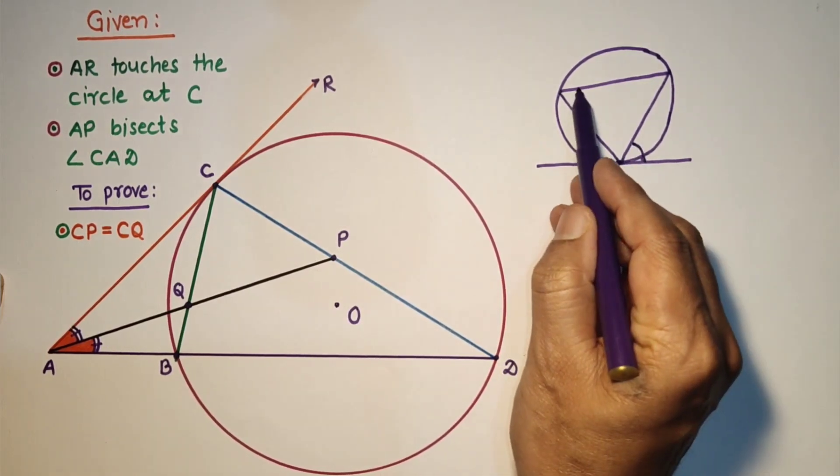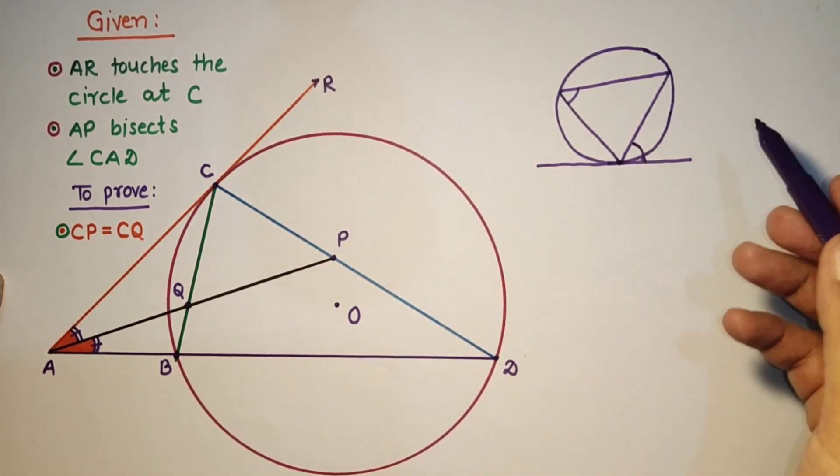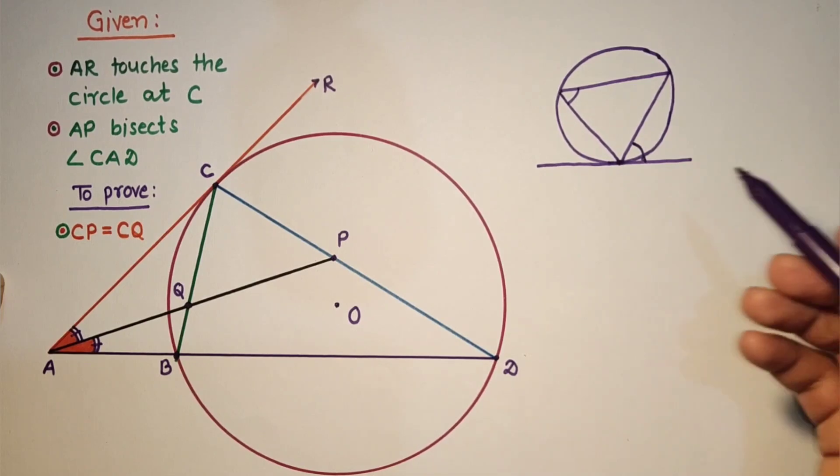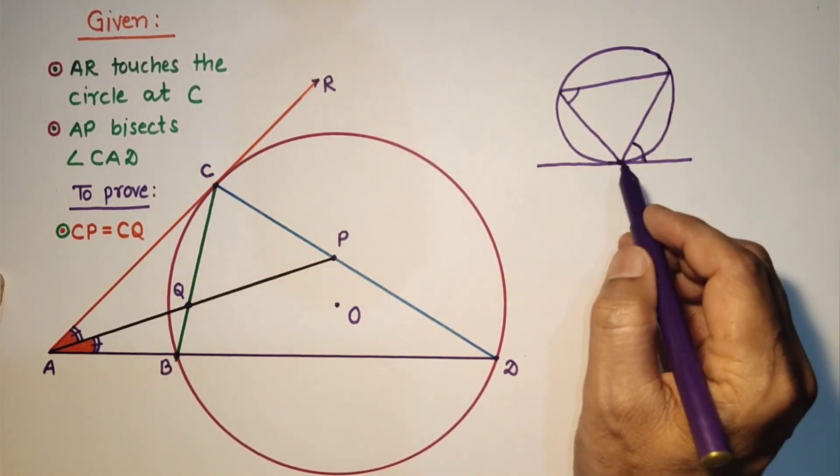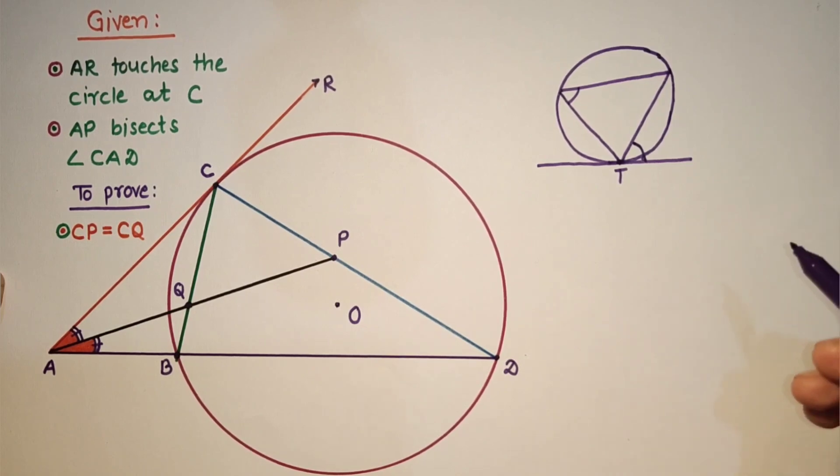This angle is equal to this angle. This is alternate segment theorem or we can say this is tangent chord theorem. We can prove it by using that.